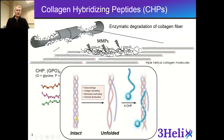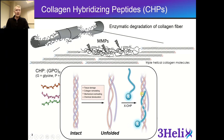Going back to our initial example, we have this nice intact structure. When it becomes damaged — either by enzymatic, mechanical, thermal, or even chemical ways — it starts to unfold and unwind. Our CHP is a small peptide that can then go in and rehybridize with the collagen strands to reform that collagen triple helix. You can think of this as the same way that primers bind to DNA during PCR.